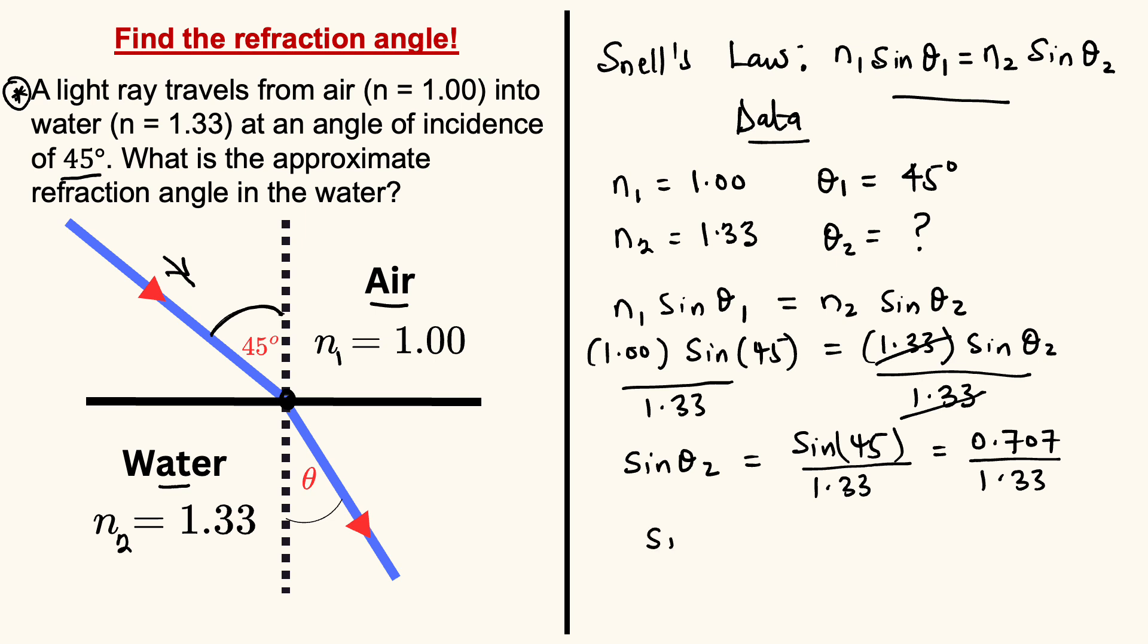we are going to have sine of theta2 equals 0.532, and then we can find theta2 as the sine inverse of 0.532. Theta2 is going to be about 32 degrees.